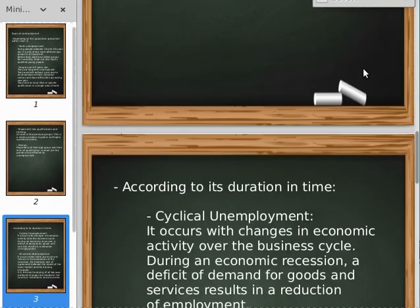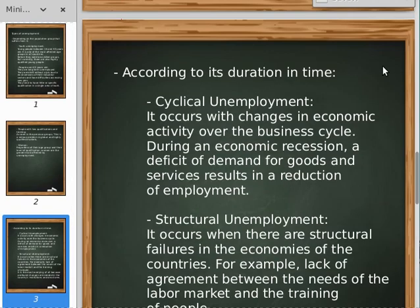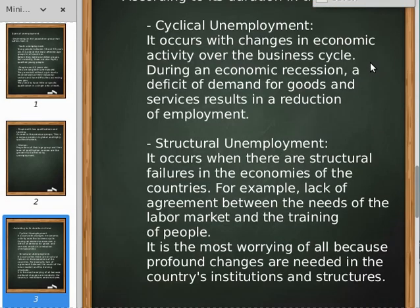The second classification is according to its duration in time. First of all, cyclical unemployment occurs when changing economic activity over the business cycle. During an economic recession, a deficit of demand for goods and services results in a reduction of employment, because firms have less demand for goods and services and they need fewer employees.